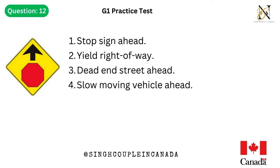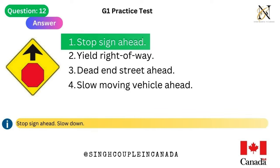Question 12. This traffic sign means: 1. Stop sign ahead. 2. Yield right of way. 3. Dead end street ahead. 4. Slow moving vehicle ahead. Answer is 1. Stop sign ahead — slow down.